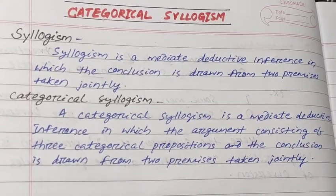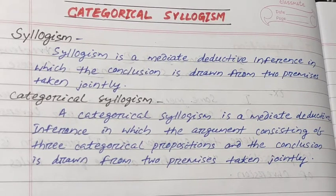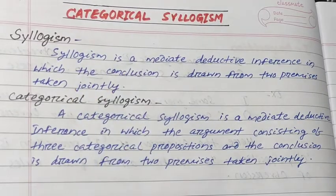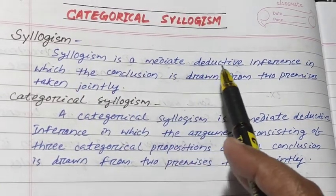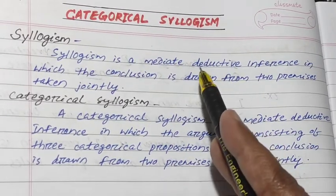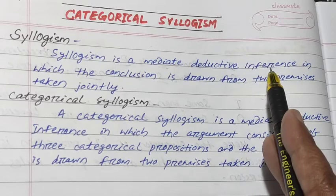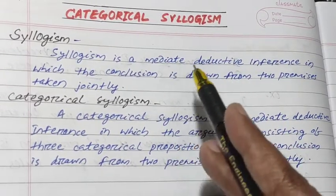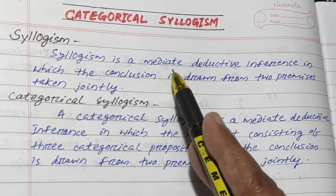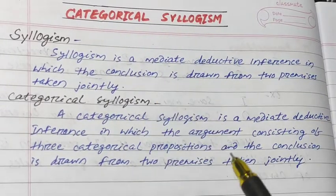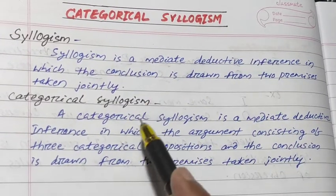Welcome to this session. Today my topic is categorical syllogism. First, let me explain what a syllogism is. A syllogism is a mediate deductive inference in which the conclusion is drawn from two premises taken jointly. Deductive inference moves from universal to particular, and mediate inference uses more than one premise. So a syllogism uses two premises and one conclusion drawn from them jointly.